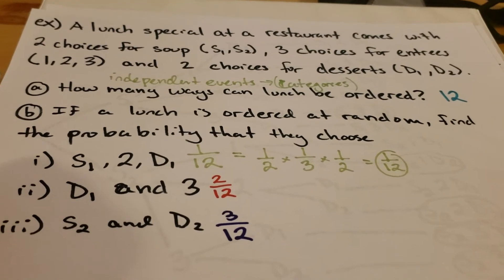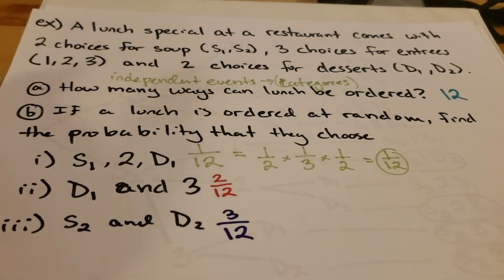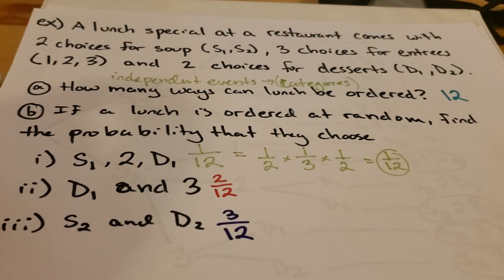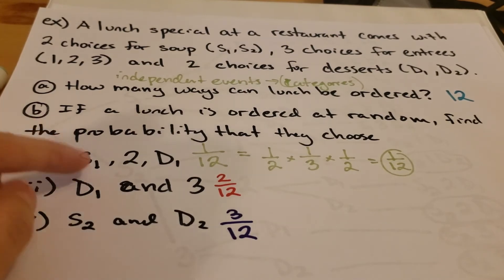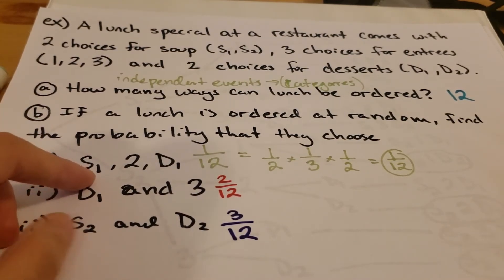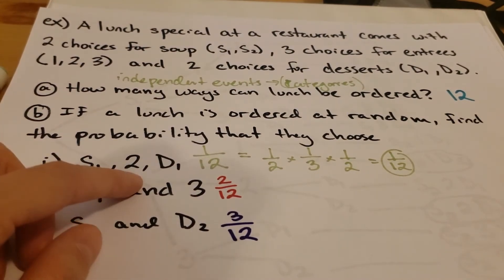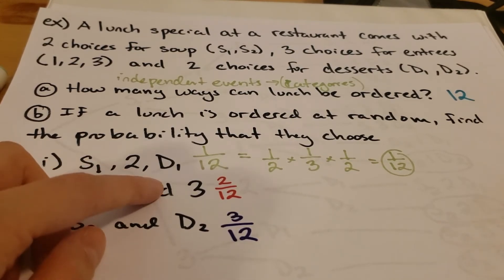Even though we don't see terms like 'with replacement' here, and this isn't something that resets like rolling a die or flipping a coin, this is another situation where we consider the events to be independent. Whatever soup we order is not going to affect what entree you choose at random, and that's not going to affect whatever dessert you pick.